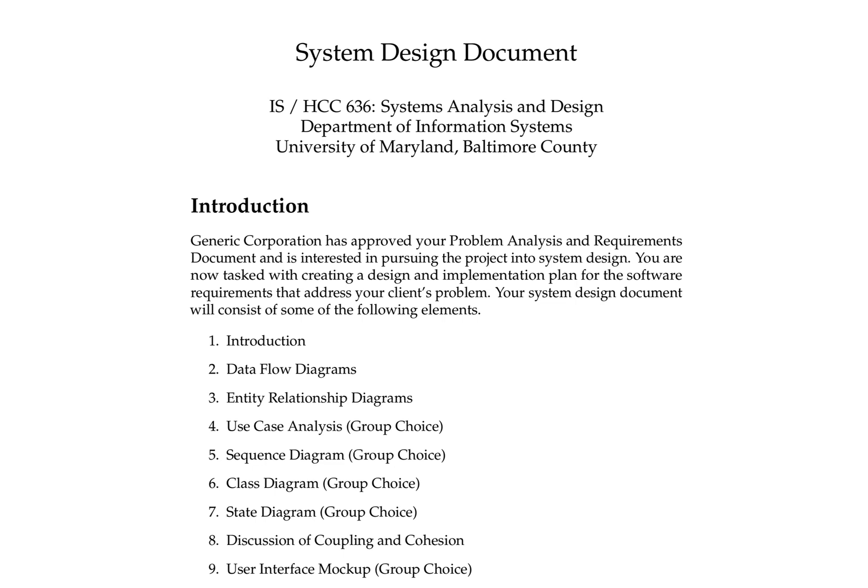This is the second deliverable, so it's a continuation of the first document — the problem analysis and requirements document that you created. You're still playing the same role: Generic Corporation has approved your problem analysis and requirements document and they're now interested in pursuing the system into design. So you're tasked with creating an actual design document and implementation plan.